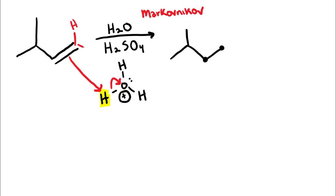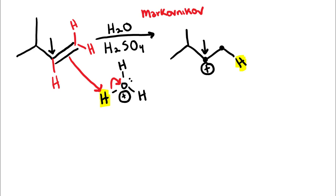Markovnikov tells us that you want to add the hydrogen to whichever side of the double bond used to have more hydrogens. The right side used to have two hydrogens, and the left side used to only have one hydrogen. So we know that we're going to add our hydrogen to the right side — the side that used to have more hydrogens. That's going to allow us to get the more stable, more substituted carbocation, because this carbon used to have four bonds, but now that we broke the double bond, that carbon is going to become deficient with only three bonds.